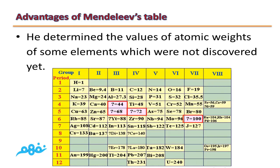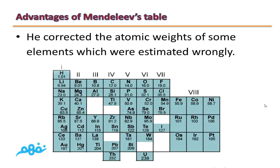The second advantage is that Mendeleev calculated the values of atomic weights of some elements which were not yet discovered. Not only did he leave gaps, but he also calculated the atomic weights of elements that would be discovered in the future. The third advantage is that Mendeleev corrected the atomic weights of some elements which were estimated wrongly, such as beryllium, gold, platinum, and so on.